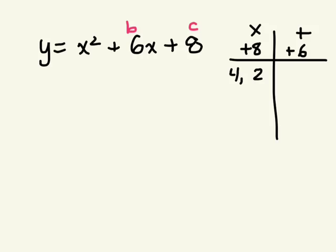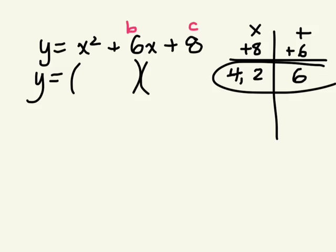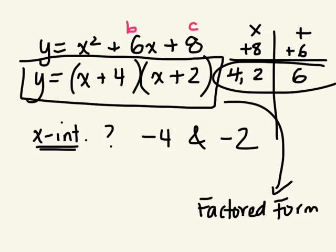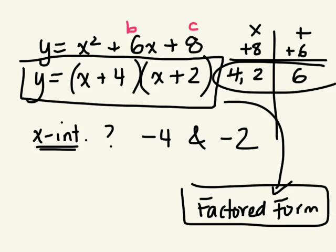4 times 2 is 8. What's 4 plus 2? That was easy. Factored form then. How do I write this in factored form? x plus 4 and x plus 2. It's now in factored form. Can you guys tell me the x intercepts? Negative 4 and negative 2. That's it. We know this because it was written in factored form here.